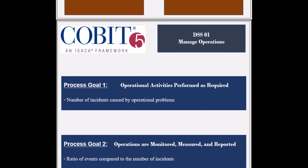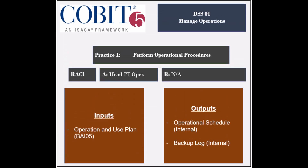The process has five practices and the first practice is to perform operational procedures. The entity held accountable for this practice is the Head of IT Operations. The practice receives one input: the operation and use plan from the BAI5 process. It generates two outputs: the operational schedule and the backup log, both used internally.